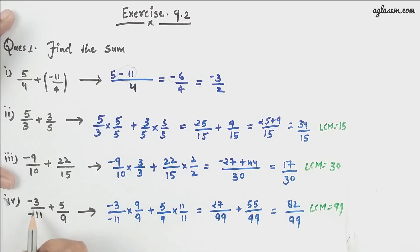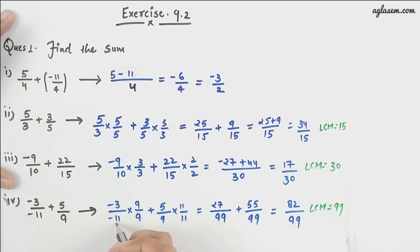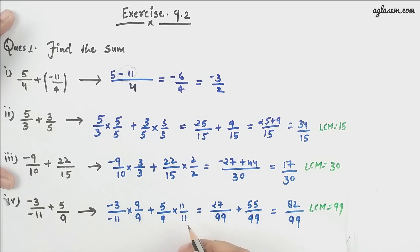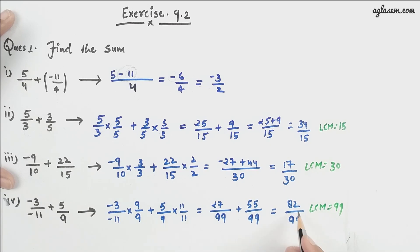Moving further, we have -3/11 plus 5/9. To convert to the same denominator, we multiply -3/11 by 9 and 5/9 by 11, giving us -27/99 plus 55/99, which equals 82/99.